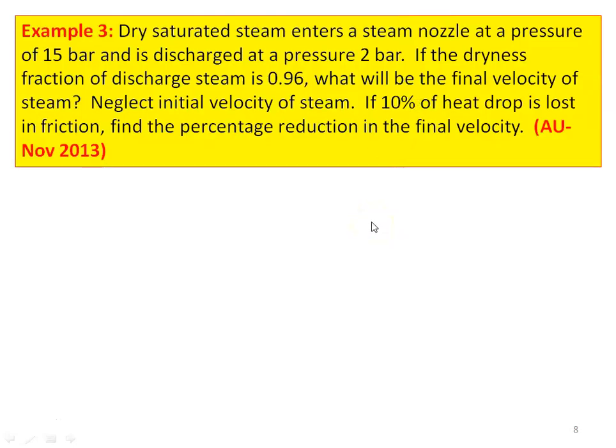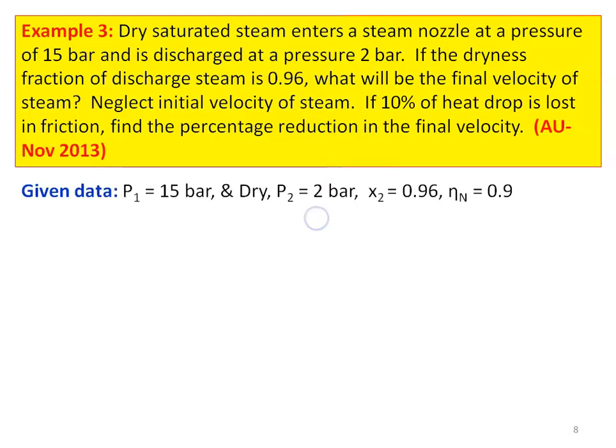Example number 3 from the November 2013 question paper. Dry saturated steam enters a steam nozzle at a pressure of 15 bar and is discharged at a pressure of 2 bar. If the dryness fraction of the discharge steam is 0.96, what will be the final velocity of the steam? Neglect the initial velocity. If 10 percent of the heat drop is lost in friction, find the percentage reduction in the final velocity. Given: P1 equal to 15 bar, dry saturated steam; P2 equal to 2 bar; X2 quality at the exit equal to 0.96; nozzle efficiency is 90 percent (since 10 percent heat drop is lost).